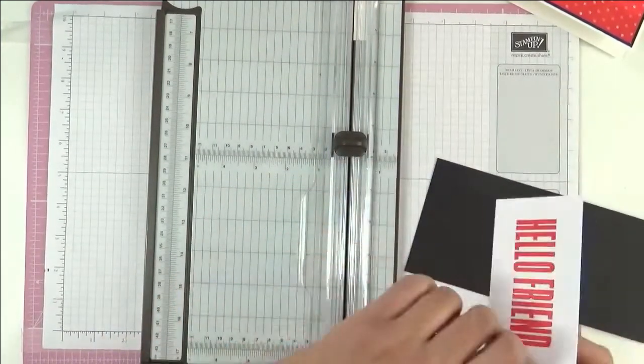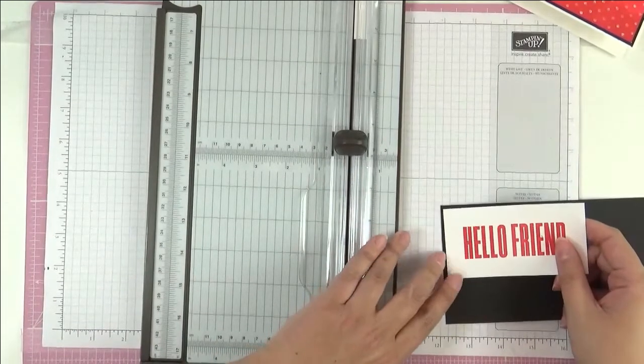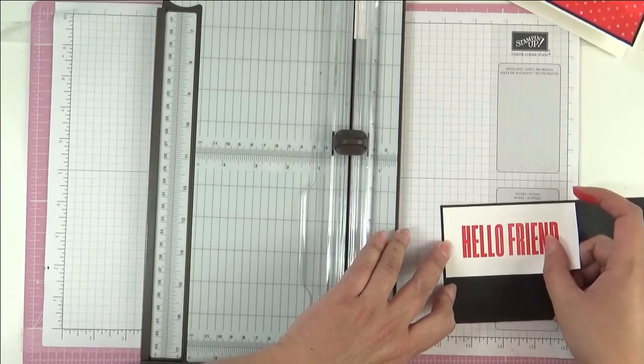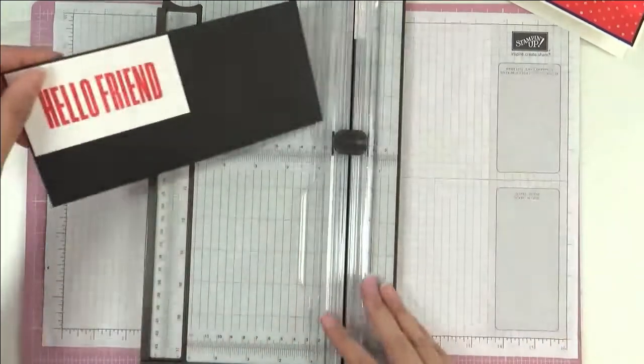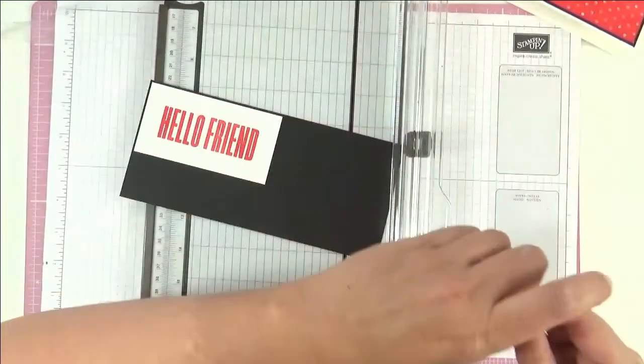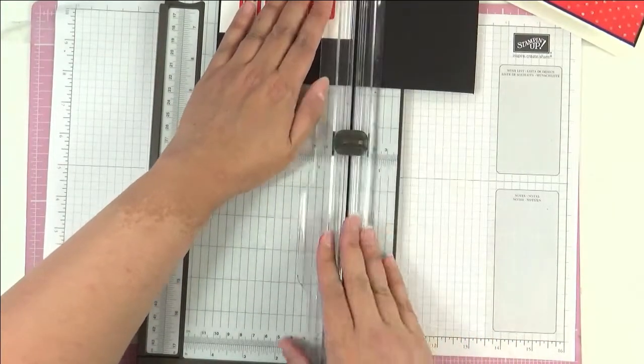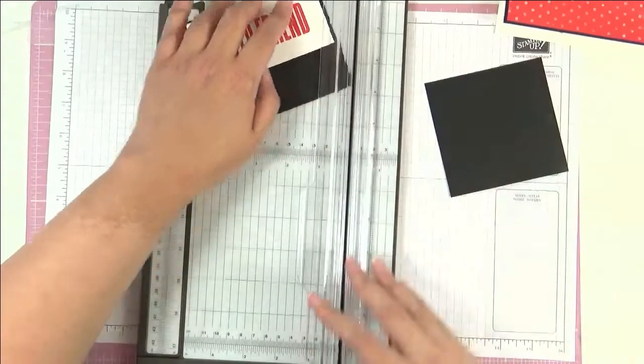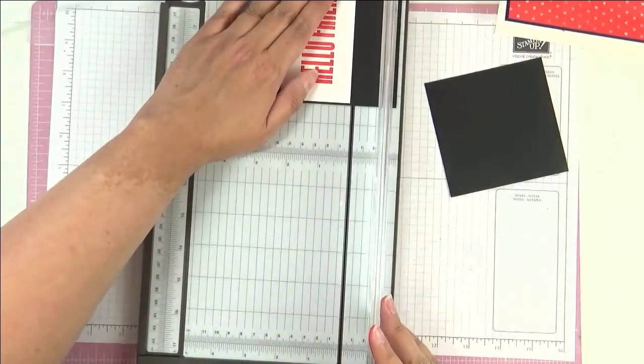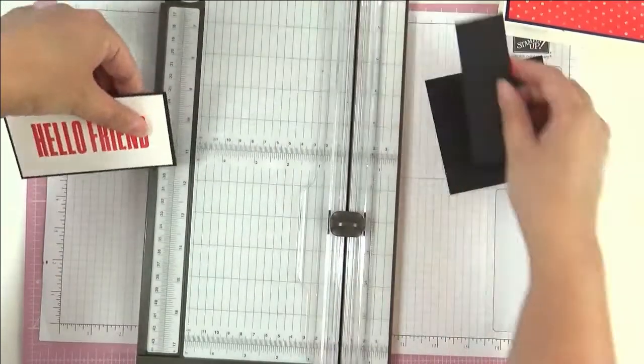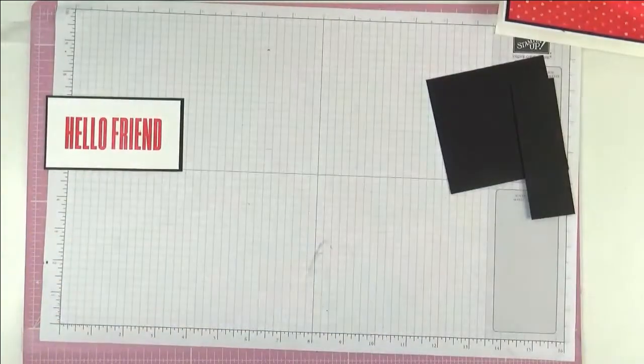Then I'm going to stick this down on a piece here of Basic Black again and just mat it like that. And then I'm going to use my trimmer just to cut off the ends, just like that.